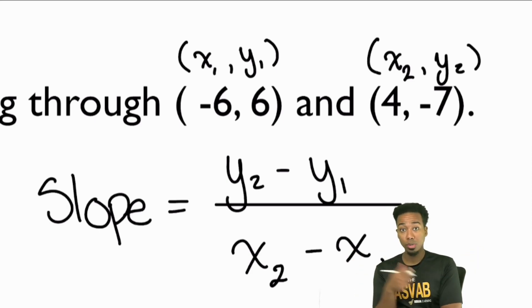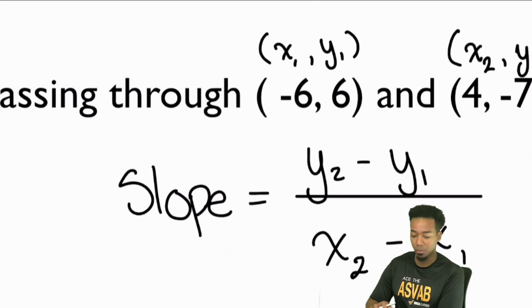You can swap it. You can say that the negative six and six is x2, y2. But you cannot say that it's x1 with y2. No. Or x2 with y1. No. You have to be consistent, especially in the formula.